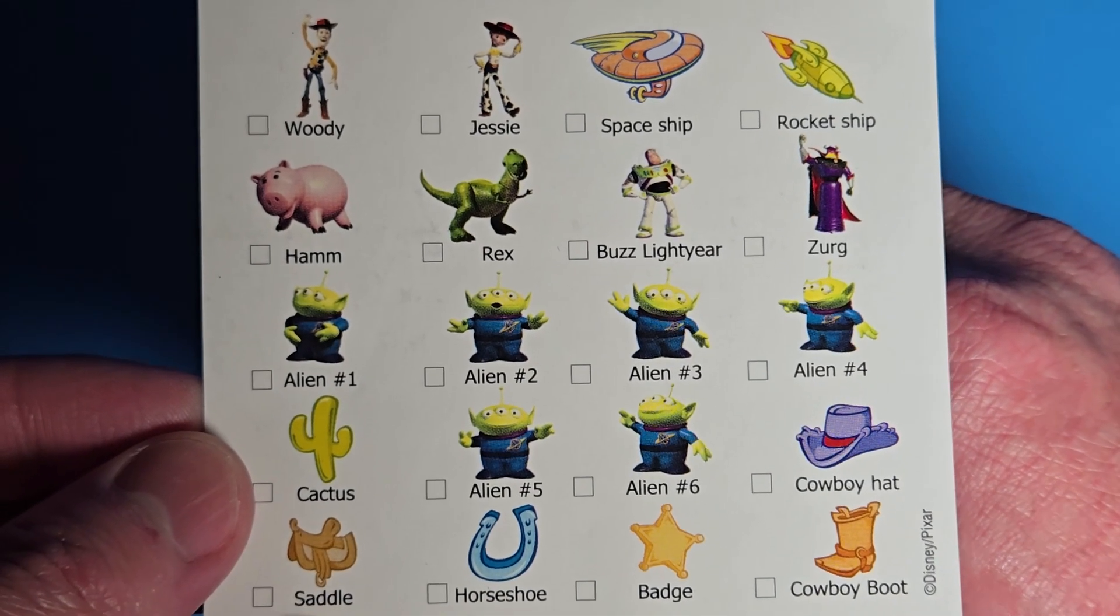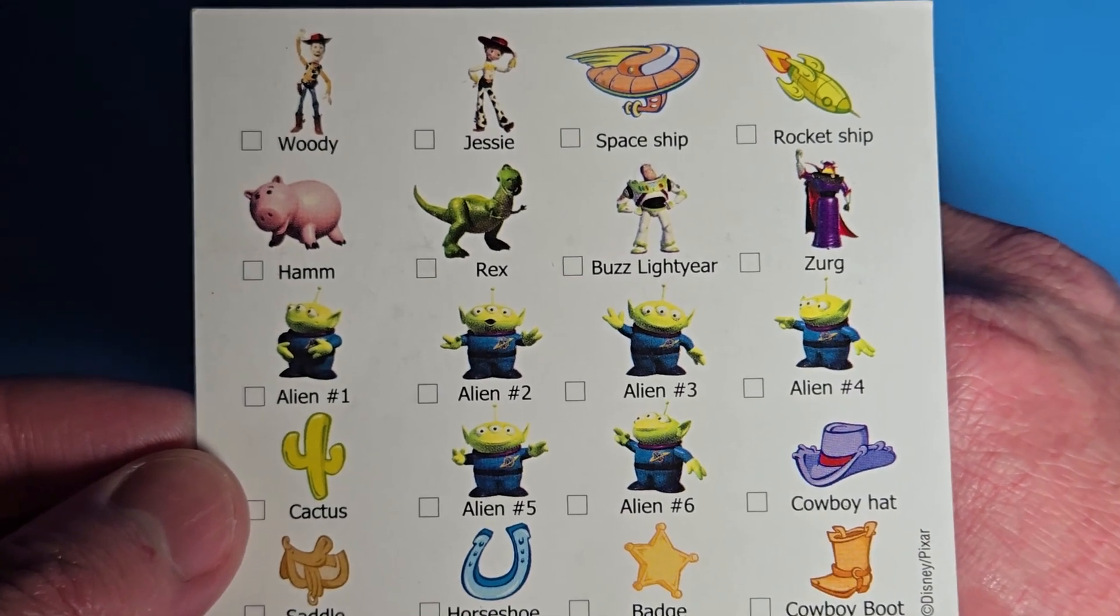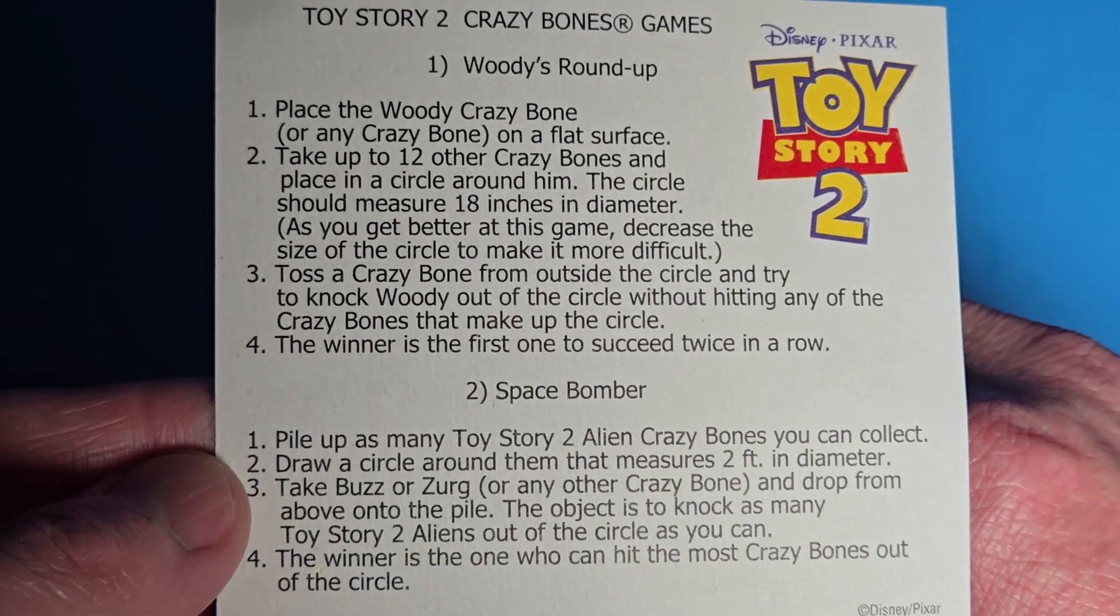I would have liked to see Slinky Dog or Mr. Potato Head. The back side of the checklist gives the rules for two different games.